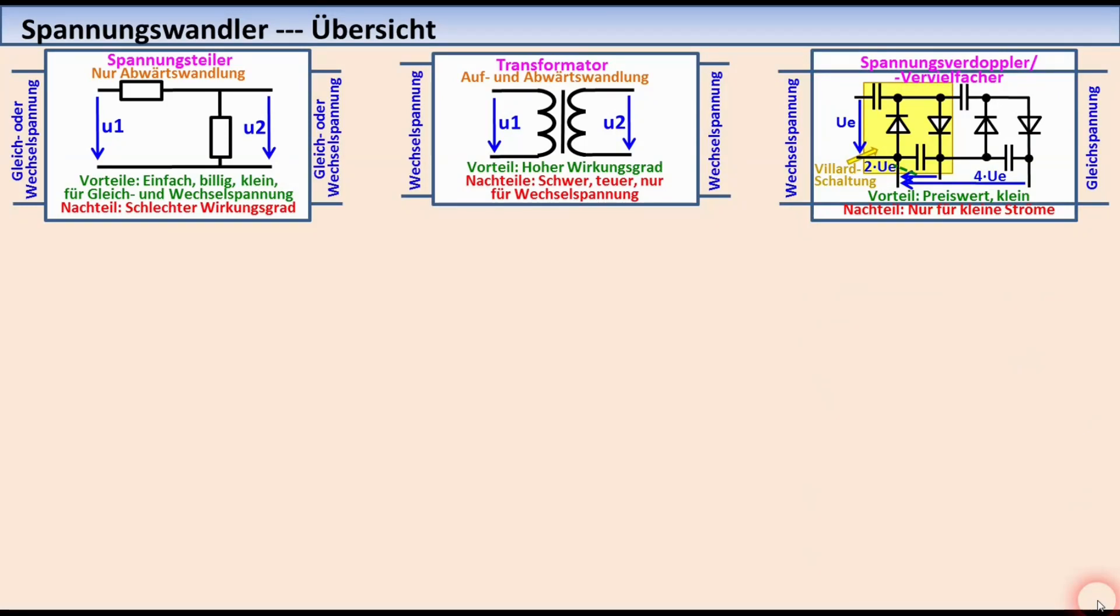Spannungsvervielfacher mit Dioden und Kondensatoren bewirken grundsätzlich zu einer Gleichrichtung auch noch eine Spannungsverdopplung bzw. Vervielfachung. Die gelb markierte Willard-Spannungsverdopplerschaltung kann beliebig oft in Kaskade geschaltet werden. Eine Anwendung ist zum Beispiel die Erzeugung einer hohen Anodenspannung bei Bildröhren.